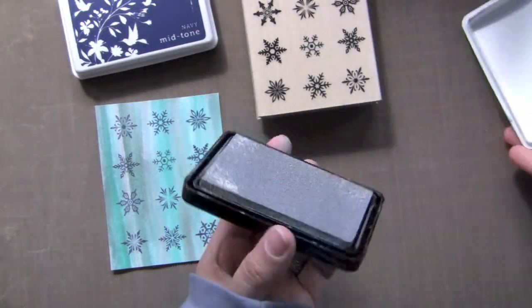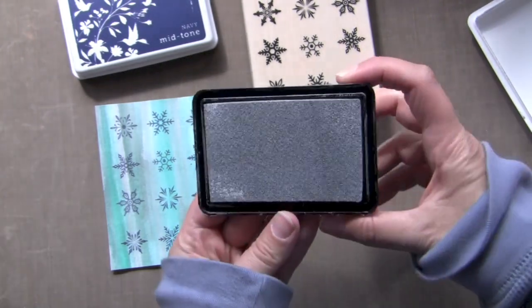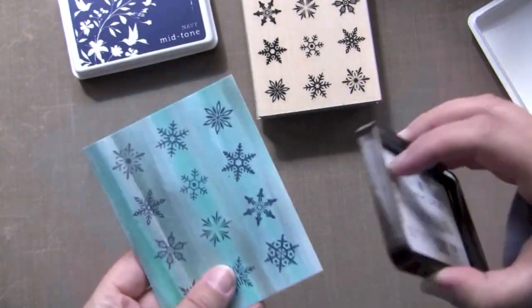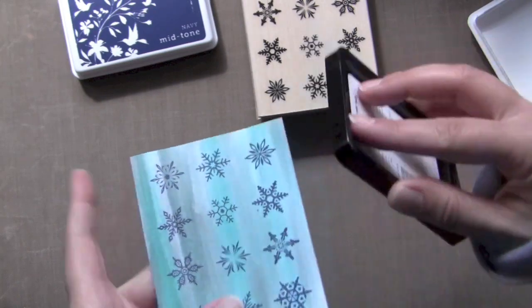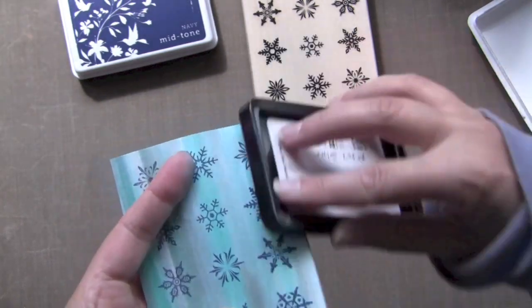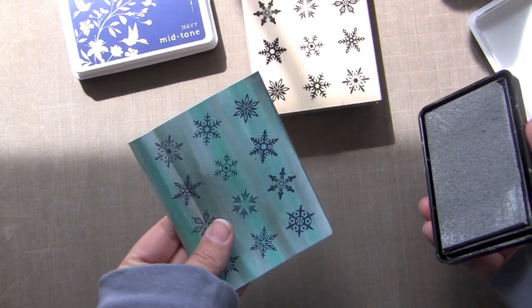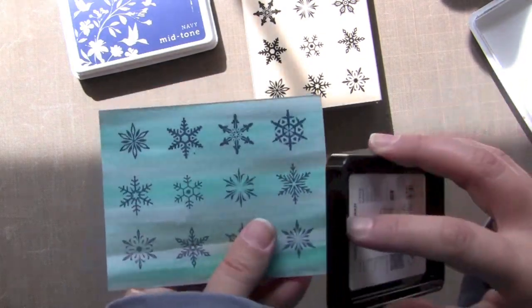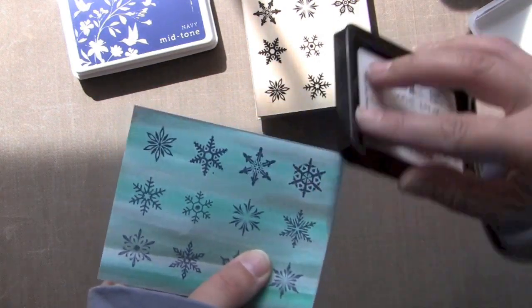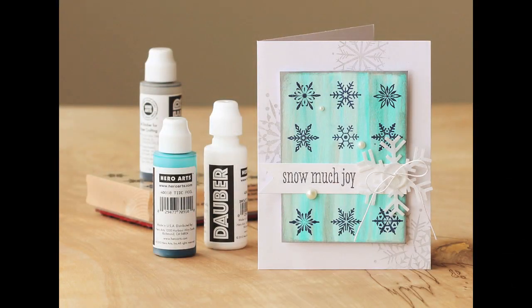And then I went ahead and stamped the snowflake sampler with navy. And now I'm going to take the new silver ink and just go along the edges. This kind of gives it a little subtle shimmer. I don't know if you can see that or not. The sunlight keeps going in and out here today, so my camera has a hard time adjusting.